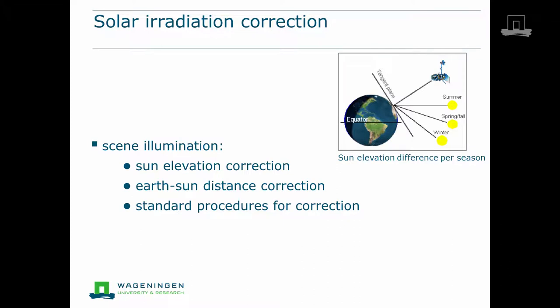The position of the sun in relation to the earth determines the incoming irradiation at the top of the atmosphere. It varies as a function of time of the day and of the year, and it depends on the location on earth. Since the orbit of earth around the sun is elliptical, the varying distance between earth and sun is also important. However, the required corrections can be calculated exactly for every position and every moment in the year.